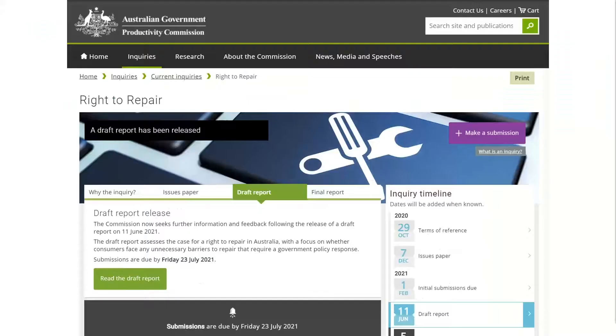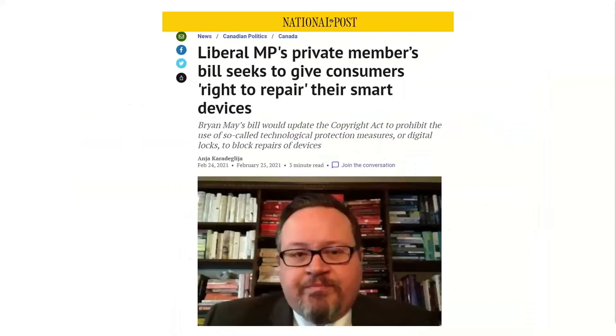The EU also passed eco design regulations requiring manufacturers of certain devices to provide access to parts and tools to professional repairers. Right to repair is sweeping the EU. Earlier this year, the Australian Government Productivity Commission released a draft report on right to repair and sought comment. iFixit participated and testified. We're eager to see the final report coming out in October with recommendations that encouraged right to repair and reform to Australia's copyright law, which is quite similar to the U.S.